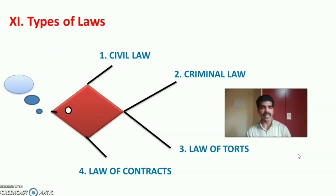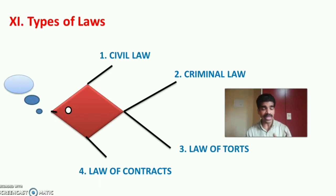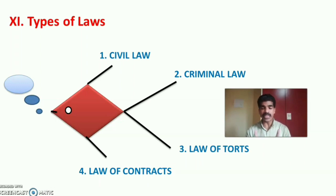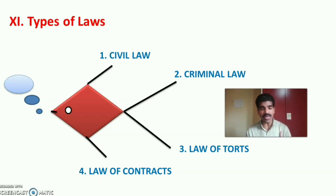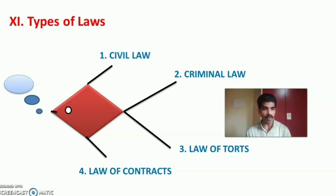Next are the types of laws in our country. There are four important types: civil law, criminal law, law of torts, and law of contracts. Civil law deals with matters related to property, contract, torts, trust, family, etc. Criminal law is related to all criminal violations of social norms. The law of torts deals with civil wrongs or independent contracts. The law of contract is an agreement enforceable by law — for example, when a patient is admitted in a hospital, there is a contract between the hospital authority and the patient regarding their treatment.